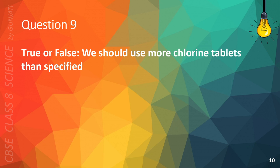Question 9. True or false? We should use more chlorine tablets than specified. The correct answer is B. False.